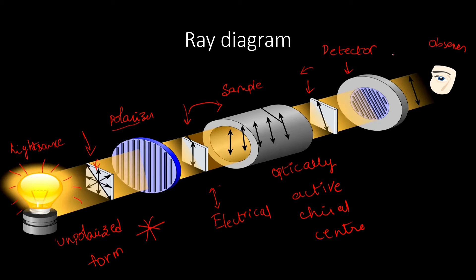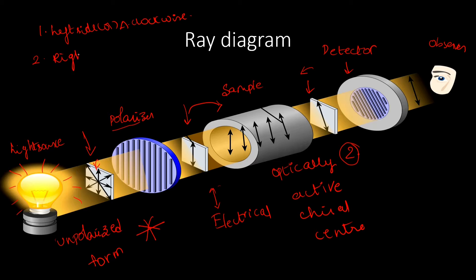So here we have two possible results when we test a sample for optical activity in ORD. The plane polarized light passing through the sample will either turn to the left side, which is anti-clockwise, or to the right side, which is clockwise.